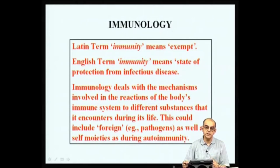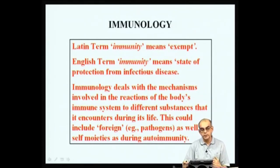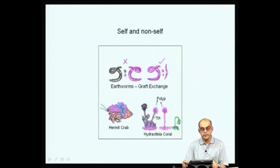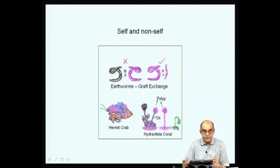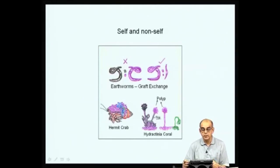Your body's immune cells distinguish between what is self to you and what is non-self to you. There is the increasingly evident important concept that immunity involves actually perception of danger from non-danger. If you look at the distinction between self and non-self, it is not so much peculiar only to higher organisms like mammals — it is also seen in very primitive animals.